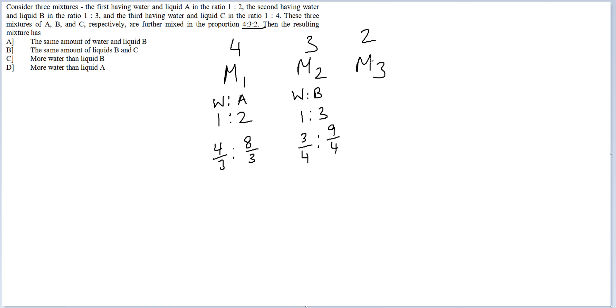And finally, we have mixture 3 where water and C are in the ratio 1 is to 4, so water would be 2 by 5 and C would be 8 by 5.